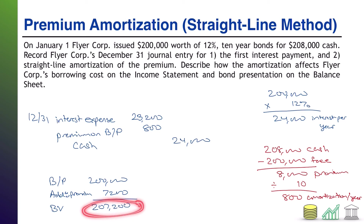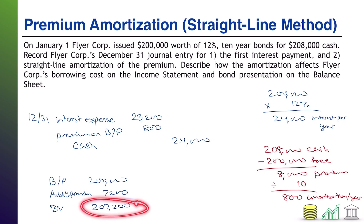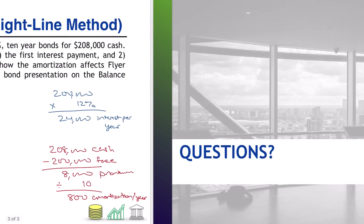The value of the bond has gone down as a result of amortizing the premium, and that's exactly what should happen — the premium will go down another $800 each year, and every time it goes down, this book value goes down, until ultimately at maturity the book value of this bond will only be $200,000, and at that point you're ready to pay it back. That was your test of premium amortization under the straight line method. It's just as important to understand why you're doing it and what it does from a financial statement standpoint as it is to understand the actual journal entries. Hope you found this helpful.